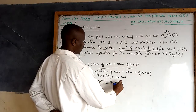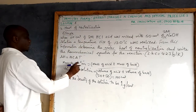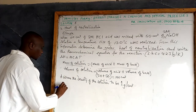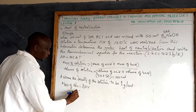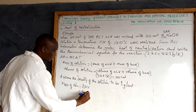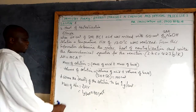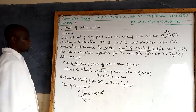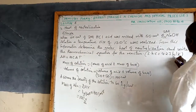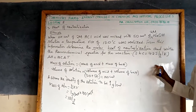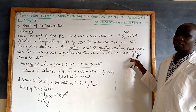The assumption is that we assume the density of the solution to be the same as that of water, which will be 1 gram per centimeter cubed. So from there we can calculate the mass of the solution: mass equals density times volume, so 1 g/cm³ times 100 cm³, giving us 100 grams of the solution.